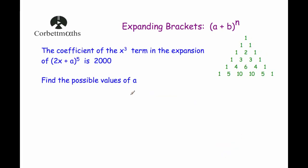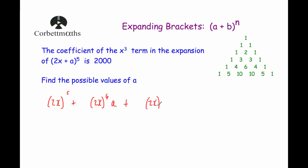Our last question: the coefficient of the x cubed term in the expansion of 2x plus a all to the power of 5 is 2000. Work out the possible values of a. We expand until the x cubed term: (2x) to the power of 5, then (2x) to the power of 4 times a, then (2x) to the power of 3 times a squared, and since this is the only term with x cubed, we stop there.